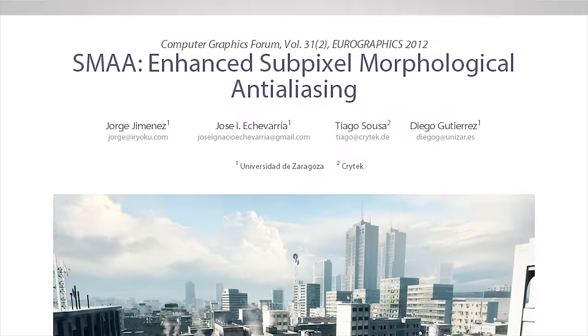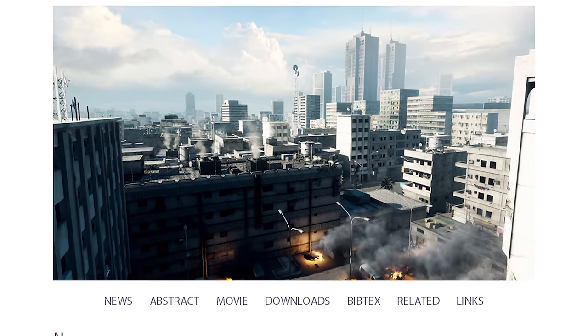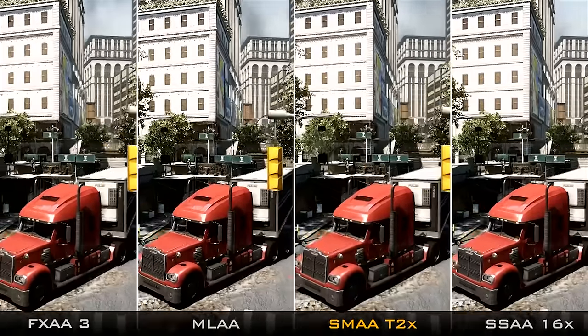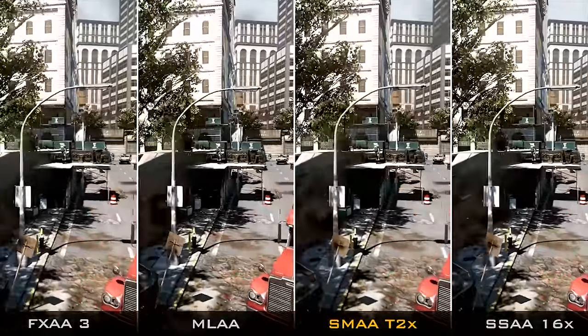One such solution is SMAA, or Subpixel Morphological Anti-Aliasing. This combines morphological anti-aliasing, a post-processing technique that identifies aliasing based on patterns and blends colors around them to diminish that aliasing, with supersampling like MSAA or SSAA to sharpen the entire scene.